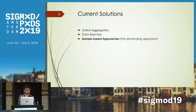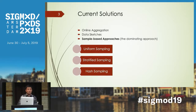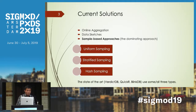Current solutions include online aggregation, data sketches, and also the sample-based approach, which is the dominating approach. To make samples, there are several sampling techniques, including uniform sampling, stratified sampling, and hash sampling. This method has been deployed in many AQP engines, including VerdictDB, QuickR, and BlinkDB.